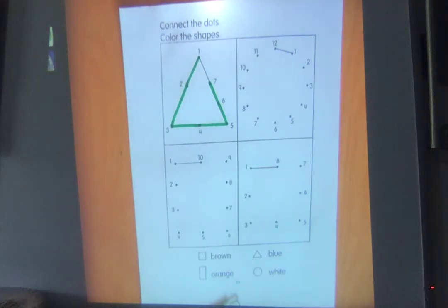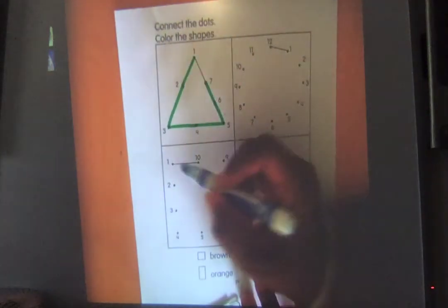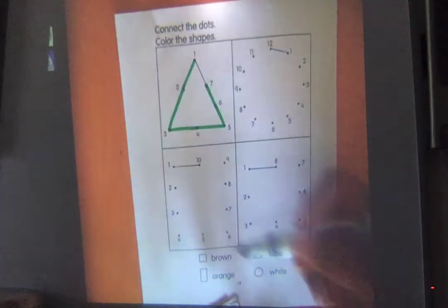So let's do one together so you can see what it looks like. Okay, so here we go. All right, count with me as we go. Ready? We're going from 1 to 10. Let's go.